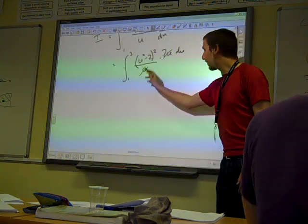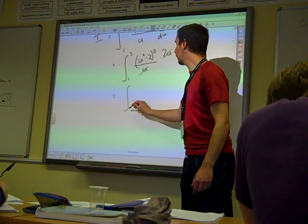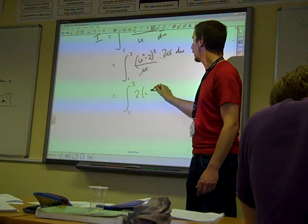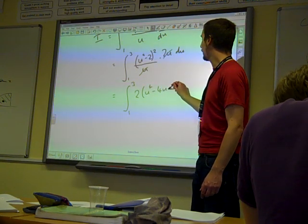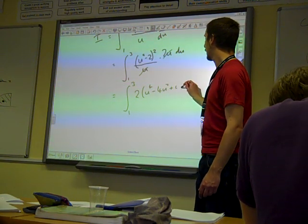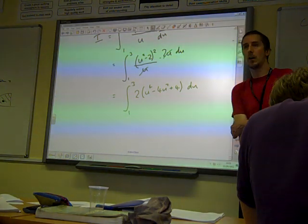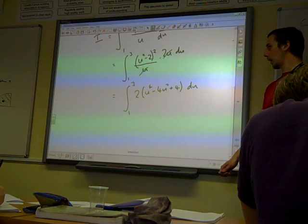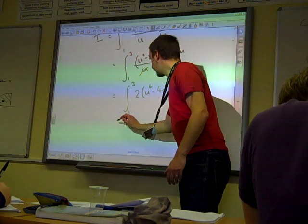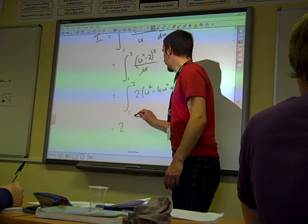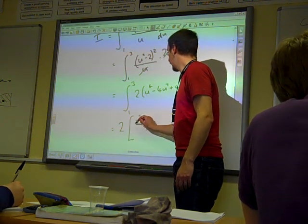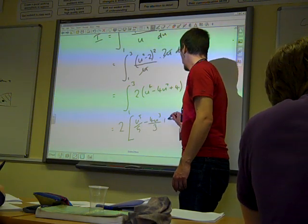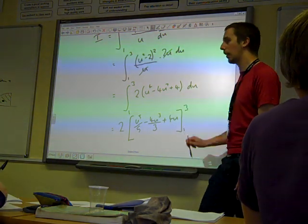But writing it in such a way it gives us DX by DU which is 2U. Now the U cancels out. There it goes. And I think it makes sense to multiply out the bracket. And so we've got twice U to the 4 minus 4U squared plus 4, which is now quite a straightforward thing to integrate. And it means we've got twice U to the 5 over 5 minus 4U cubed over 3 plus 4U between 1 and 3.